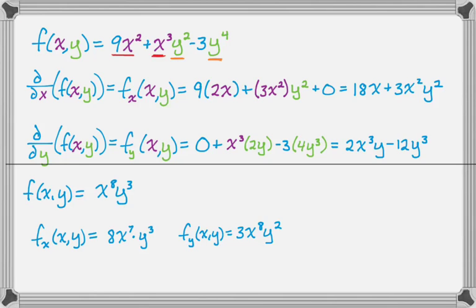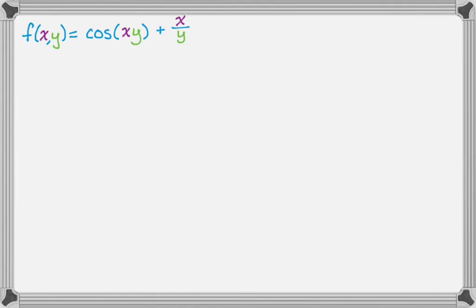I want to do one more example that involves the chain rule, because some people kind of struggle a little bit when they hit this, but as soon as you do a couple problems, it makes a lot of sense. So if I want partial x for this function, first I've got to look at the function. So I have cosine of xy plus x over y. So two different terms, handle each one separately.